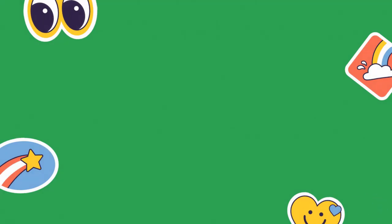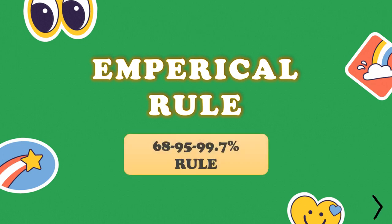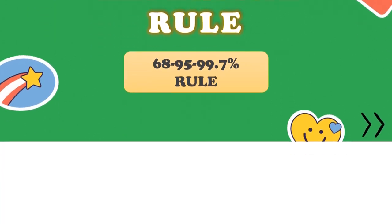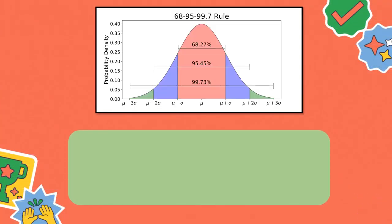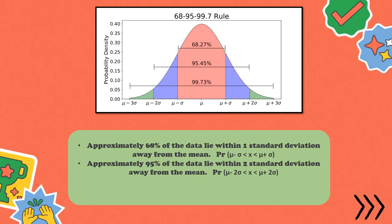Under that, we have the empirical rule, also known as the 68-95-99.7% rule. This is the representation of the empirical rule. As you can see, it has three parts. The first part is the 68% — approximately 68% of the data lie within one standard deviation away from the mean. The range will be: x is greater than mean minus standard deviation and less than mean plus standard deviation. That is the formula to get the values next to the mean.